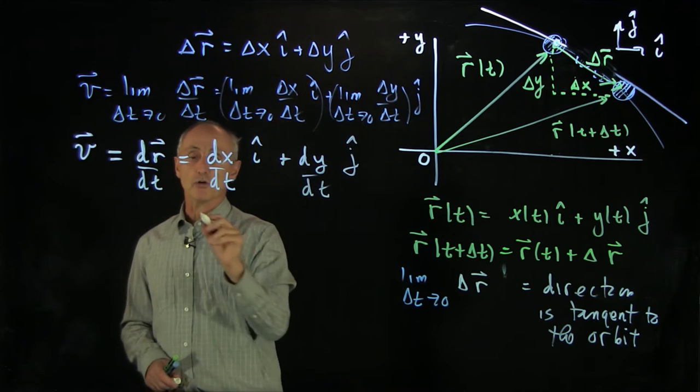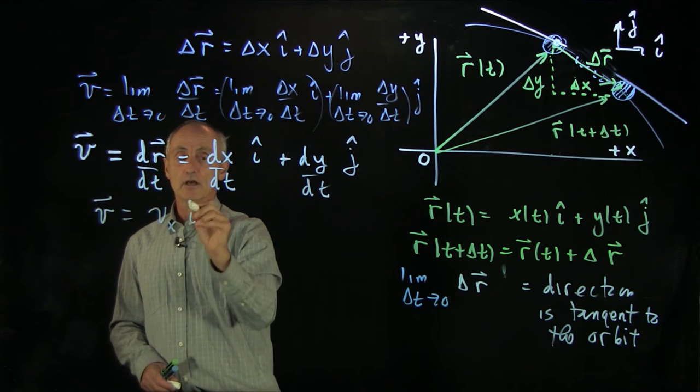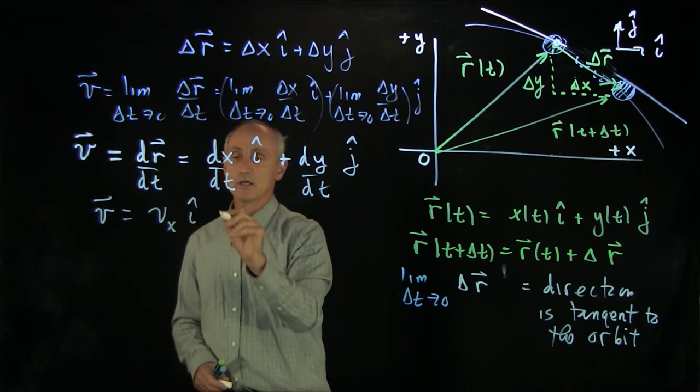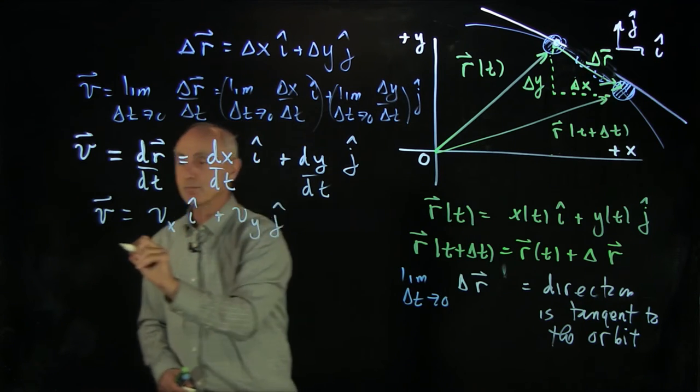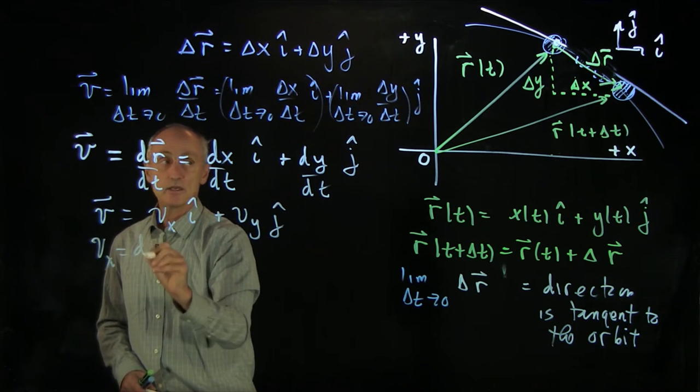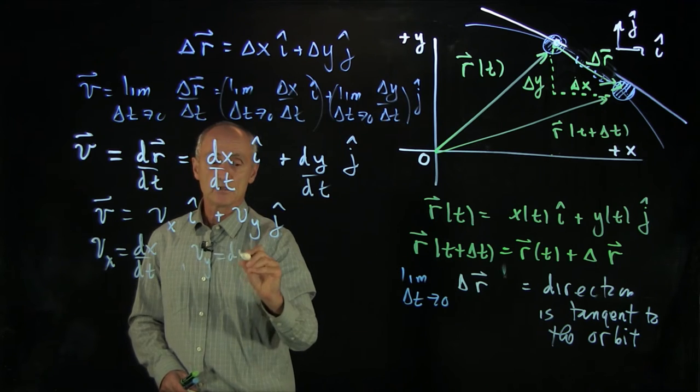Now as far as notation goes, we write this velocity as an x component of the velocity plus a y component of the velocity, where the x component vx is dx dt, and the y component is dy dt.